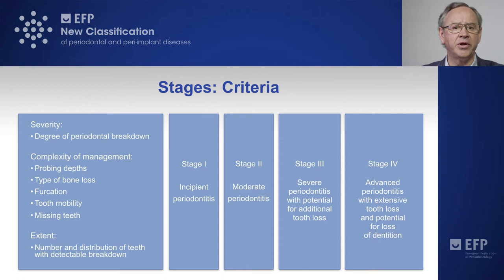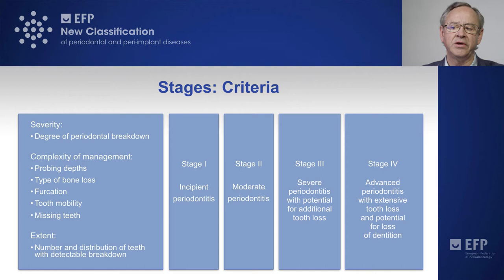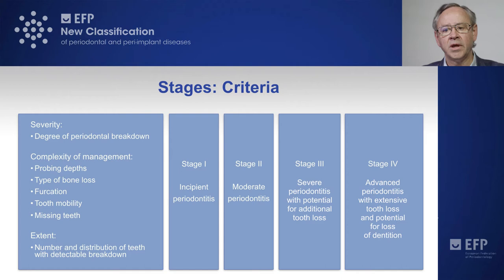Basically the main criteria is severity — the degree of periodontal breakdown — but we have added complexity of management, which is defined by probing depths, the type of bone loss, presence of furcations, tooth mobility, and the number of missing teeth. We have also defined the stages by extent, that is the number and distribution of teeth with detectable breakdown.